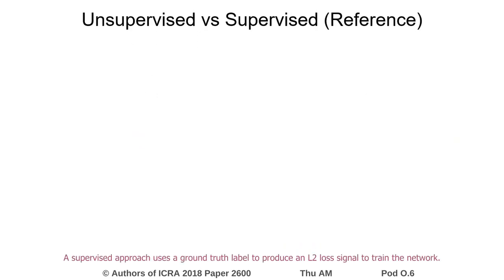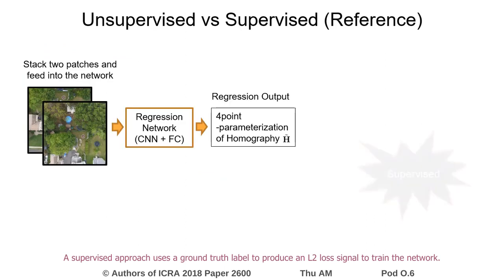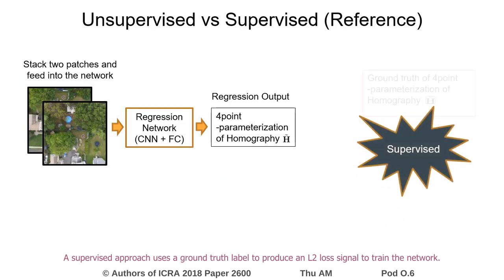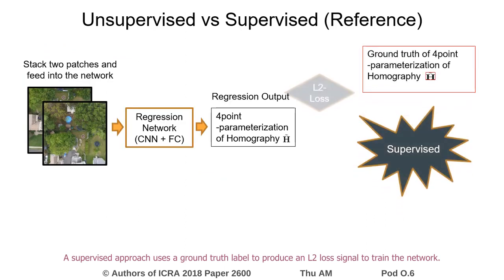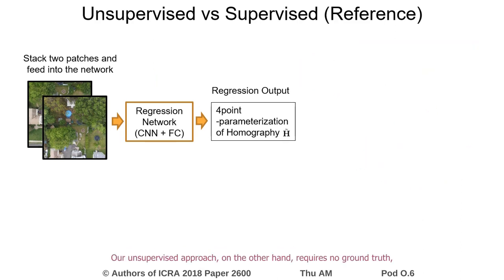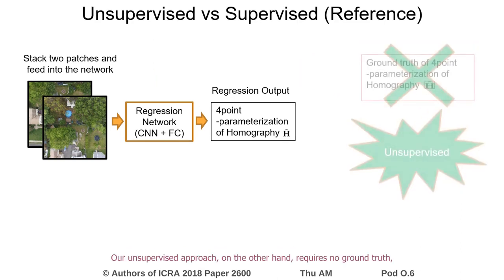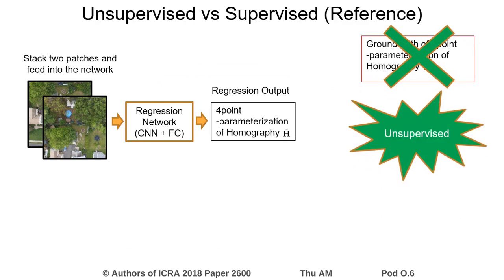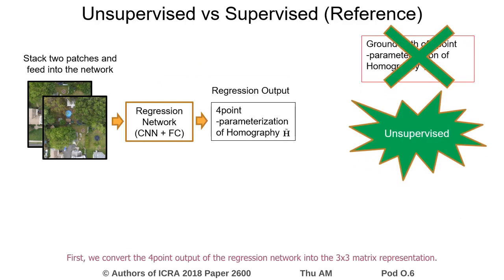A supervised approach uses a ground truth label to produce an L2 loss signal to train the network. However, homography ground truth is not easy to obtain in the real world, thus limiting this approach mostly to synthetic datasets. Our unsupervised approach, on the other hand, requires no ground truth, making it more suitable for robotics applications.